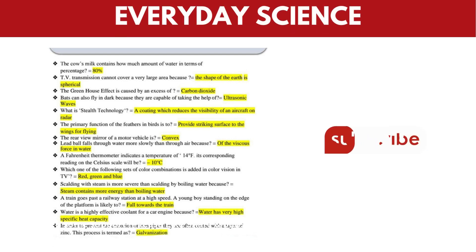Next, in order to prevent the corrosion of iron pipes, they are often coated with a layer of zinc. This process is called galvanization.